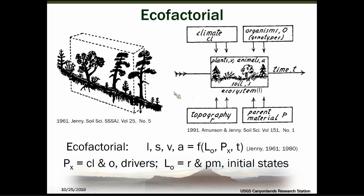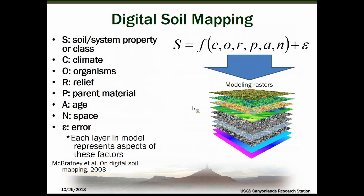One example that is perhaps less publicized is some of the work by Hans Jenny later in his career. He was one of the publicizers of the soil forming factors, with his seminal work in 1940. Another example would be an eco-factorial, where we look at some of the same drivers — climate and organisms — acting within the context of topography, parent material, and time. When we go out in the field and look at an ecosystem, we see the state of that system at that point in time, and we can think about this factorial from different perspectives to answer different questions.